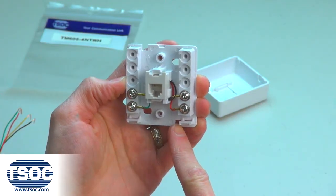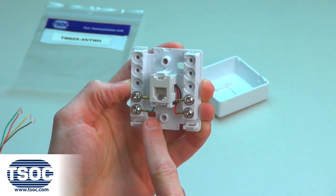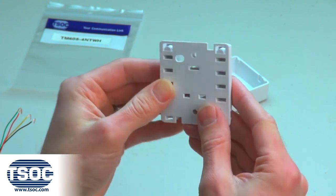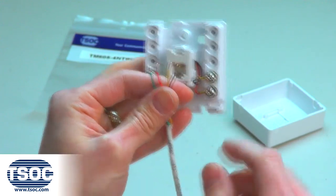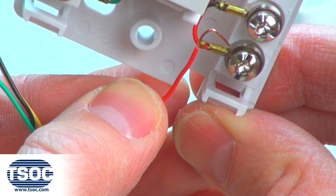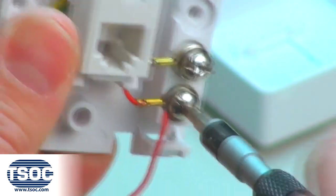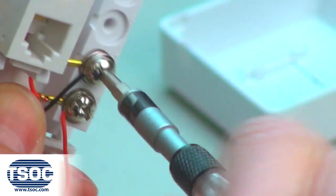Feed the UTP cable through any of the available openings of the surface mount jack. Step five: follow the corresponding color codes and secure the UTP cable to the screw terminals of the surface mount jack using a Robertson or flathead screwdriver.